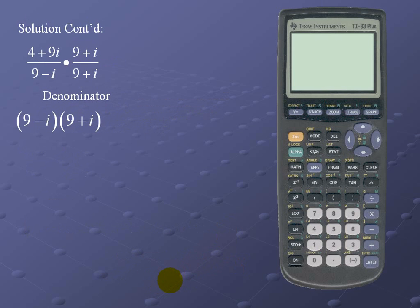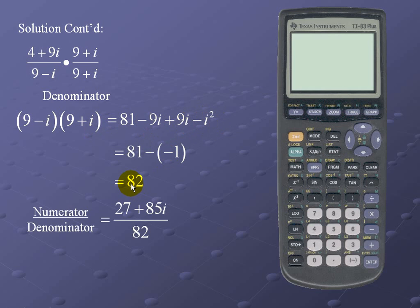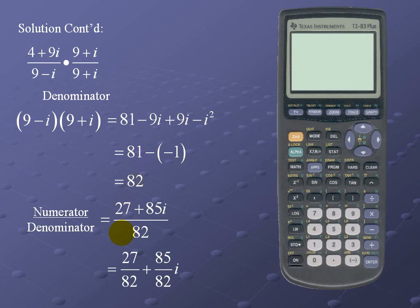Let's look at the denominator. Here again we're dealing with a sum and difference of squares, so we use the FOIL method. The innermost and outermost terms cancel, and applying the fact that i² = -1, the denominator simplifies to 82. Putting numerator and denominator together we have (27 + 85i) over 82, or written in complex form: 27/82 + (85/82)i.